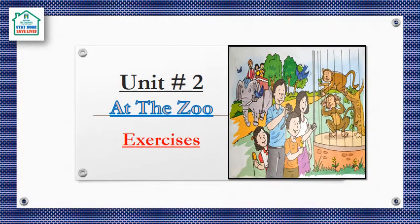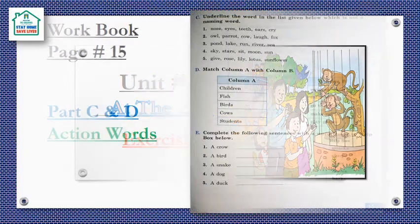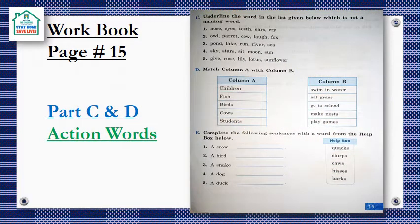Dear students, in today's lecture we are going to solve exercises of unit number 2, At the Zoo. Open your workbook at page number 15. You may pause the video right here and bring your workbook. Today we are going to solve part C and D, and we are going to learn about action words.